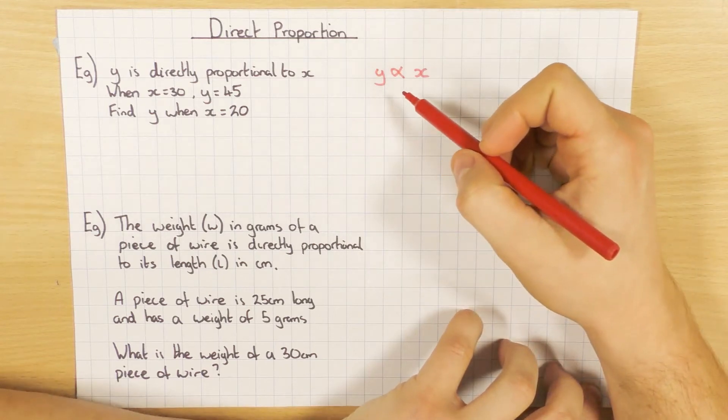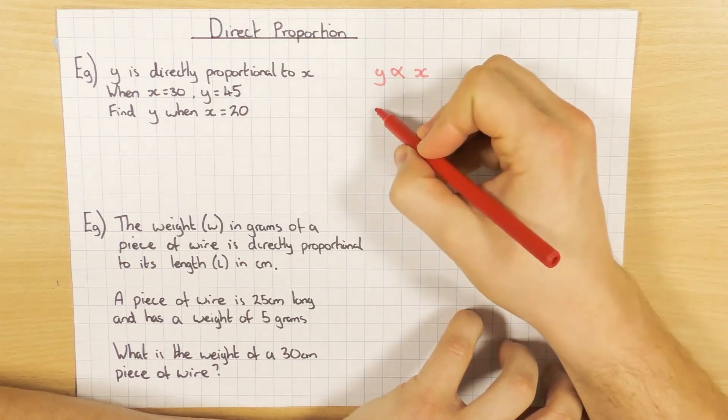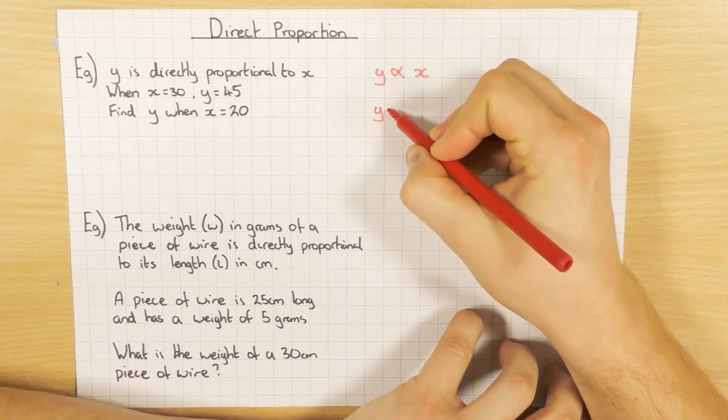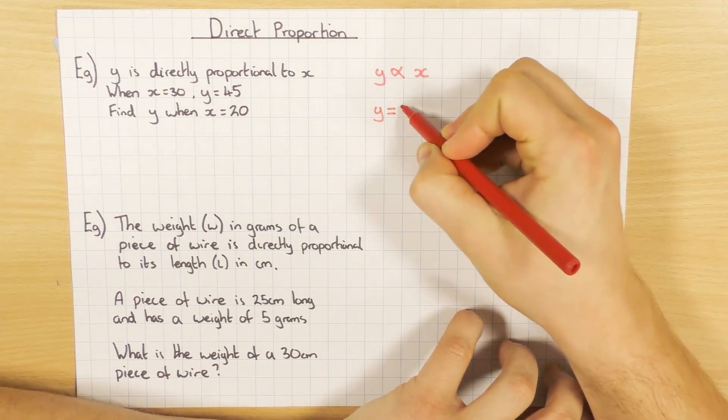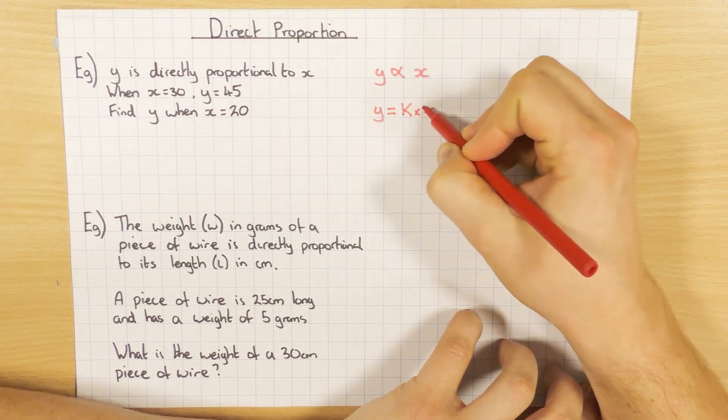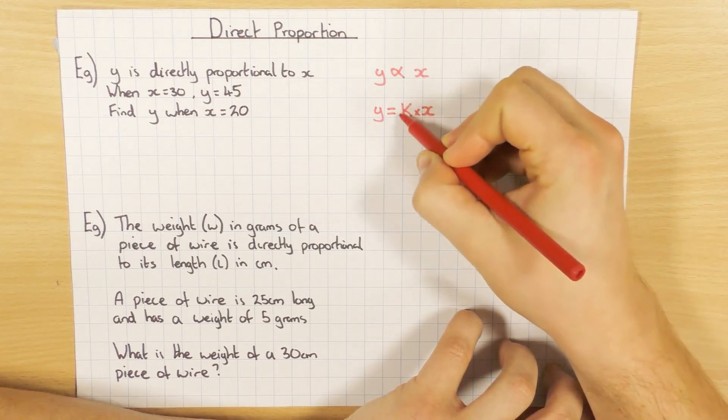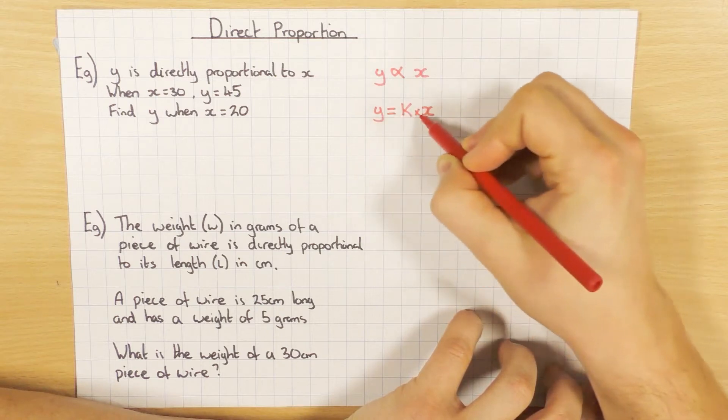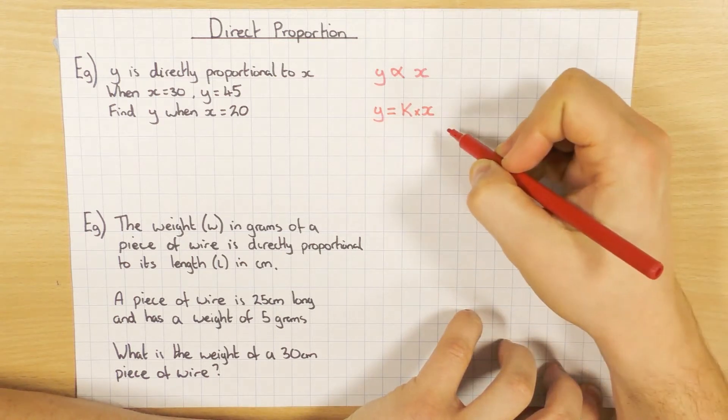We know they're both increasing but we don't know by how much. So what we do is we create a formula by saying y equals, and then we use the variable k, which just means a constant, and then that is times by x. And this is what we're going to find out. This is the relationship between y and x, this k, this constant.